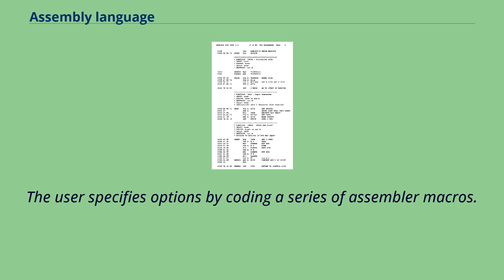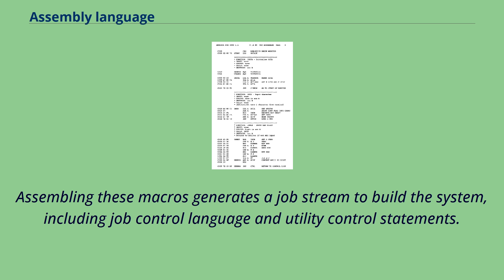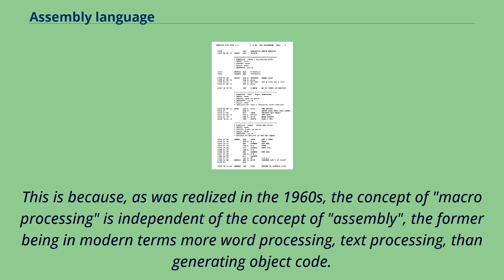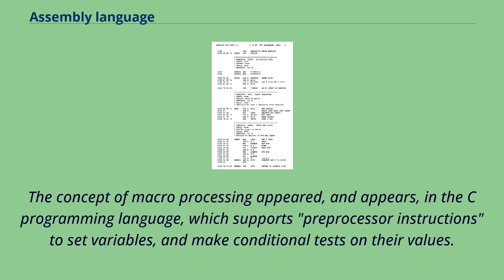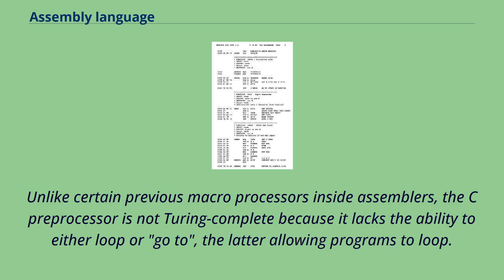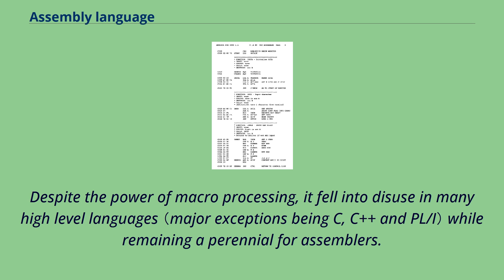This is because, as was realized in the 1960s, the concept of macro processing is independent of the concept of assembly — the former being in modern terms more word processing or text processing than generating object code. The concept of macro processing appeared in the C programming language, which supports preprocessor instructions to set variables and make conditional tests on their values. Unlike certain previous macro processors inside assemblers, the C preprocessor is not Turing complete because it lacks the ability to either loop or go to. Despite the power of macro processing, it fell into disuse in many high-level languages while remaining a perennial for assemblers.